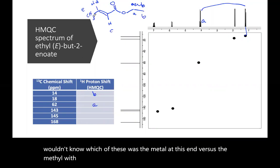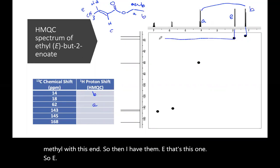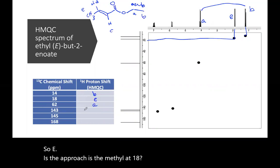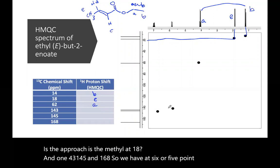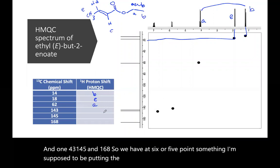So then I have the E, that's this one. So E is the methyl at 18. And 143, 145, and 168. So we have at six or five point something. Oh, I'm supposed to be putting the shifts. So this is like 5.8 goes to 143.